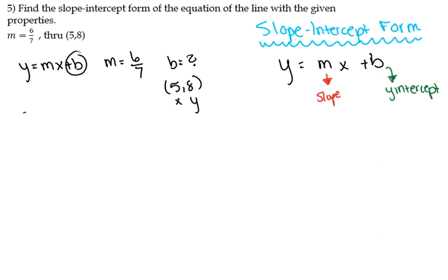When we plug them in, we're going to get 8, which is our y, equals 6 divided by 7, which is our m, times 5, which is our x, plus b, our unknown.